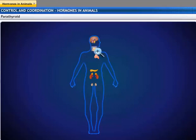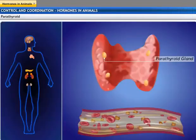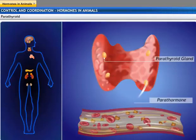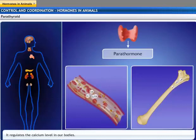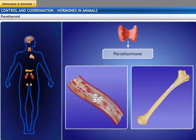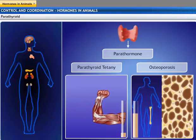Parathyroid glands are two pairs of small, oval-shaped glands embedded on the dorsal surface of the thyroid gland in the neck. They secrete parathyroid hormone, or parathormone. Parathormone helps in the regulation of calcium and phosphate ions in bones and blood. Hyposecretion leads to parathyroid tetany, and hypersecretion causes osteoporosis.